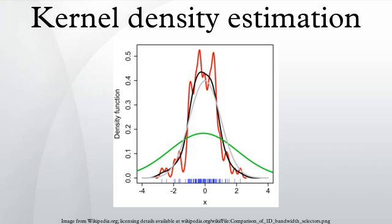The most common optimality criterion used to select this parameter is the expected L² risk function, also termed the mean integrated squared error. Under weak assumptions on f and K, MISE = AMISE(h) + O(1/(nh) + h⁴), where o is the little o notation. The AMISE is the asymptotic MISE which consists of the two leading terms. The minimum of this AMISE is the solution to this differential equation.